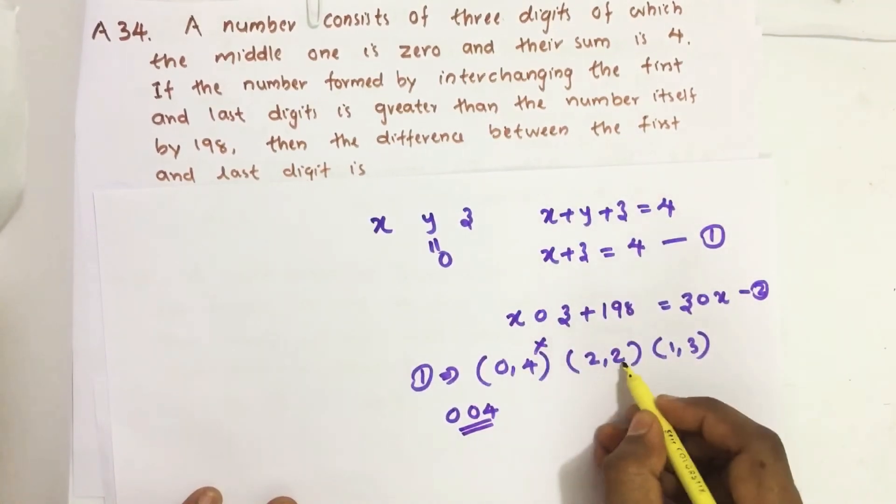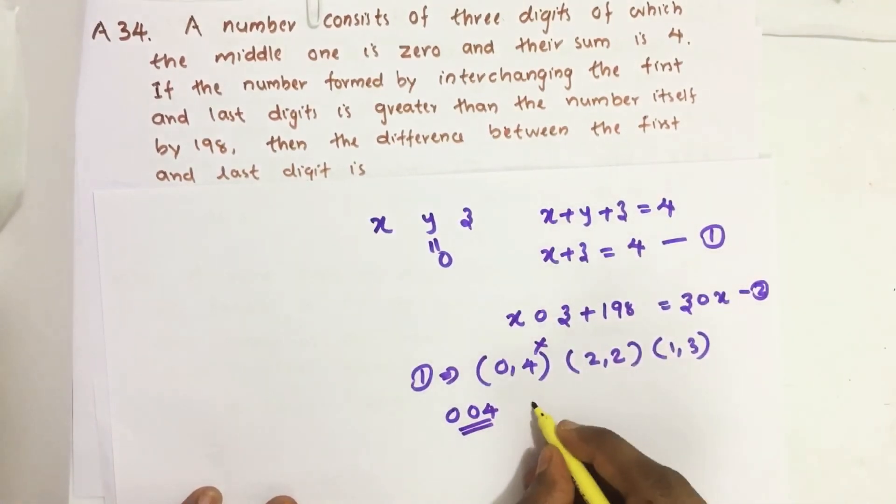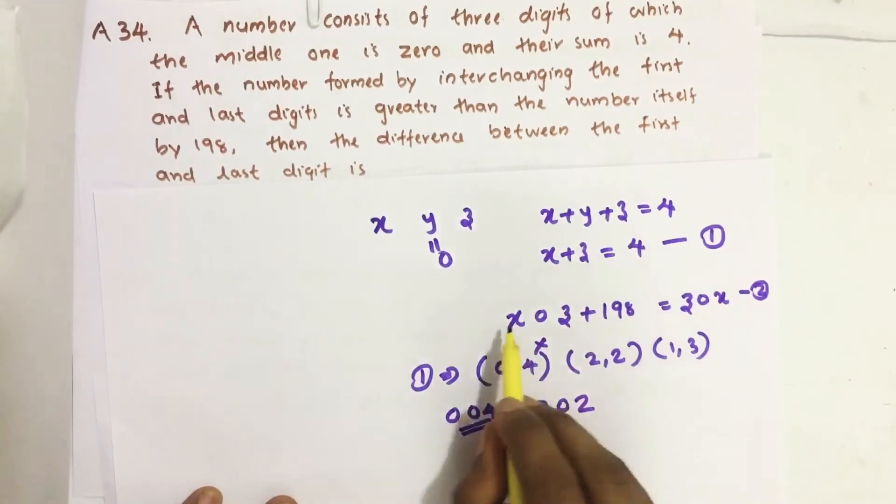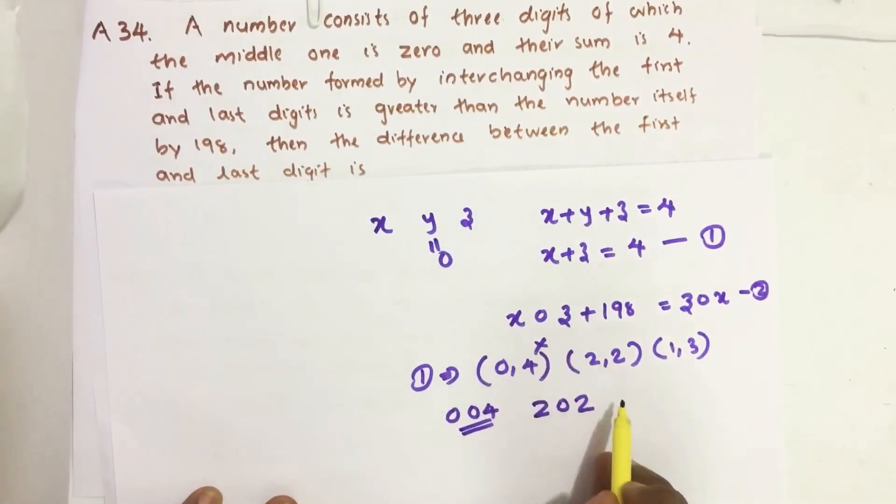Now, let us see (2, 2). If we are putting 2 for x and 2 for z, we get 202. If we are interchanging first and last, then also we get 202. So its difference is 0, so this is also not our answer.